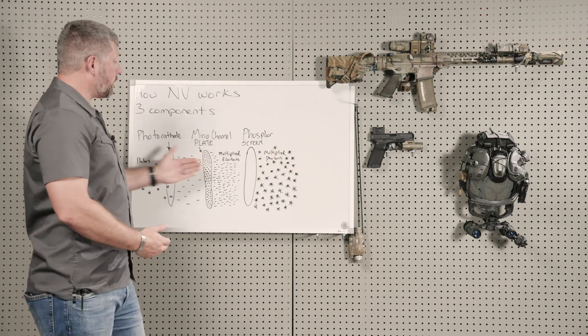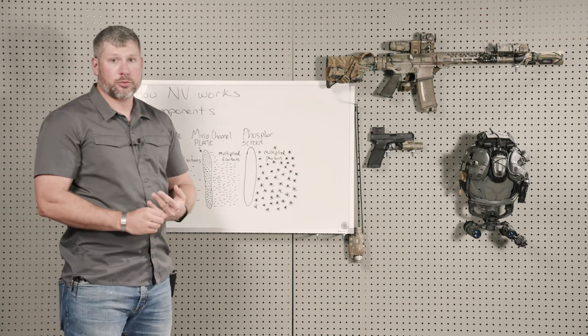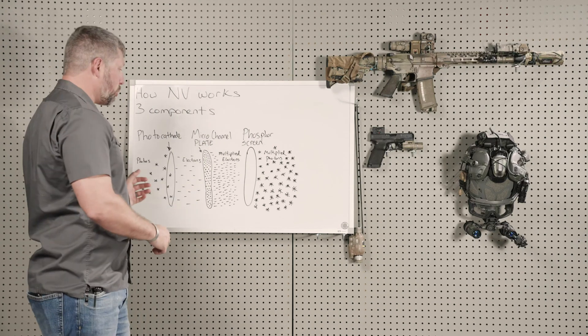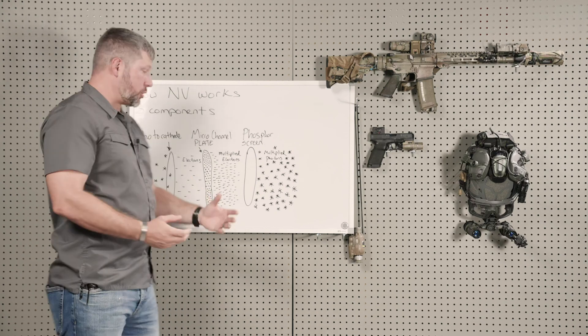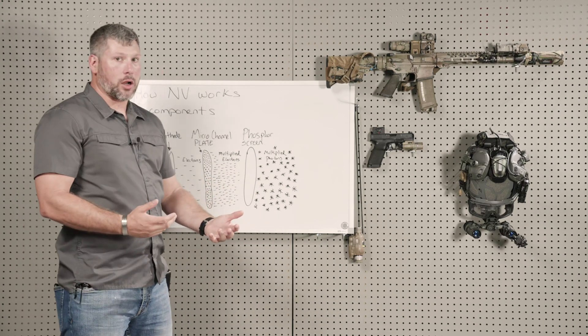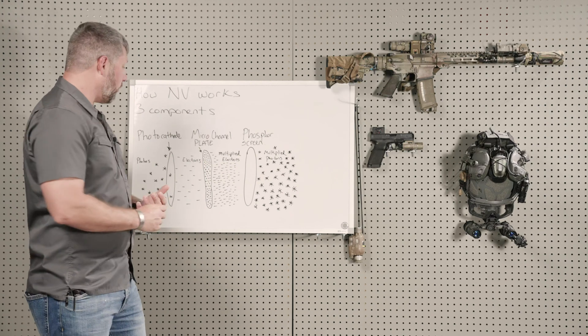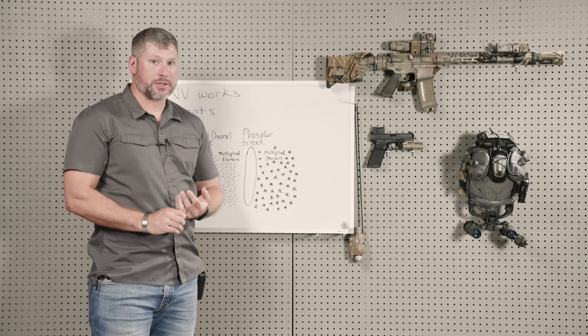So you're not actually looking through an intensifier tube or a night vision system. It is projecting an image. It's like two little TV screens. So you're seeing basically a ghosted image on the phosphor screen when you look through an energized night vision system.